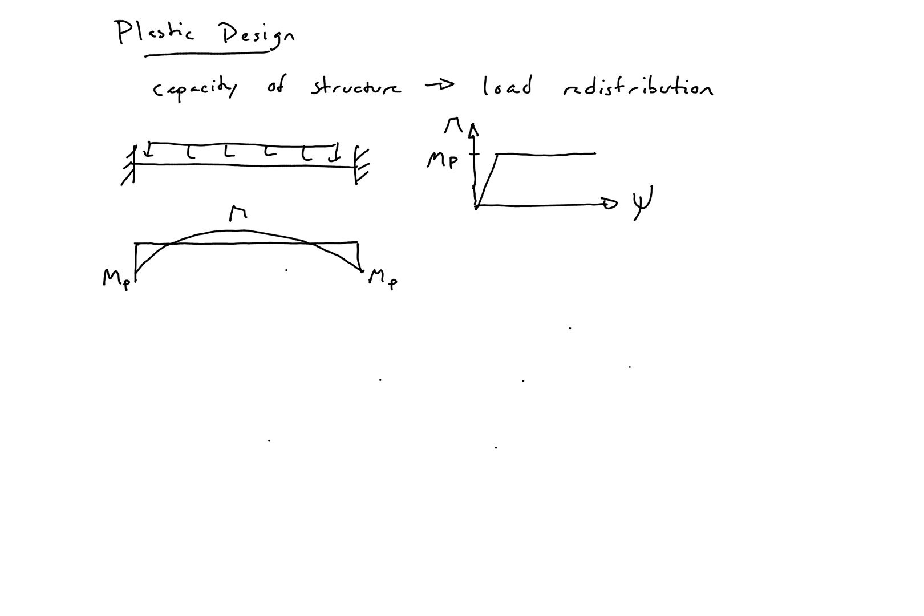And we can say that we have M1 in the middle. So what will happen when we reach MP is we'll be here on our moment-curvature diagram. So the section is not able to take any additional moment at these endpoints.